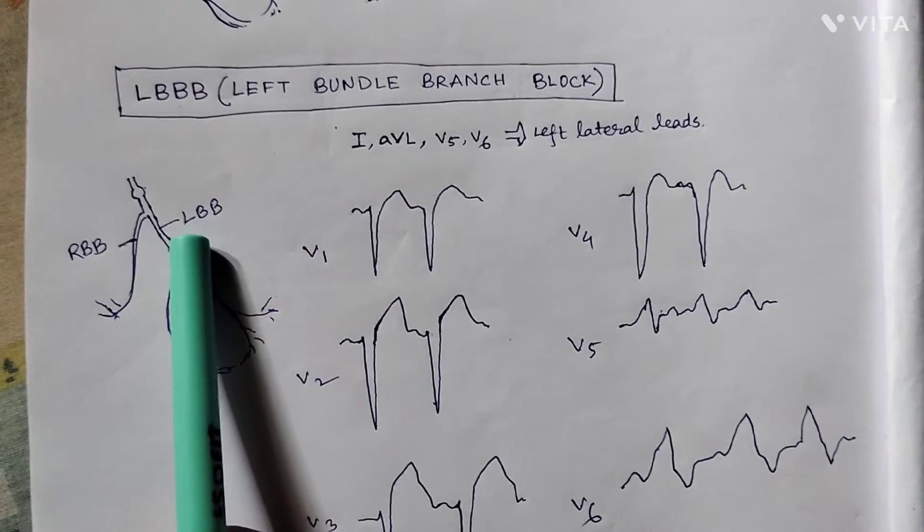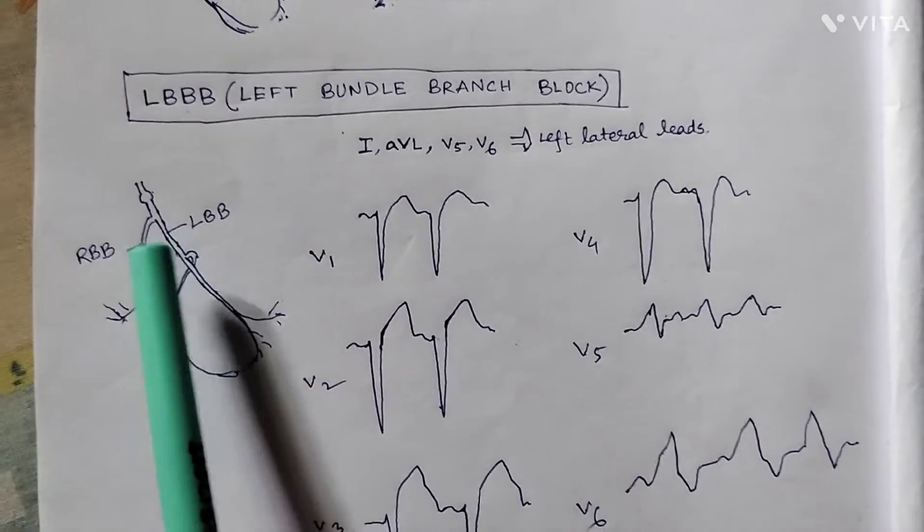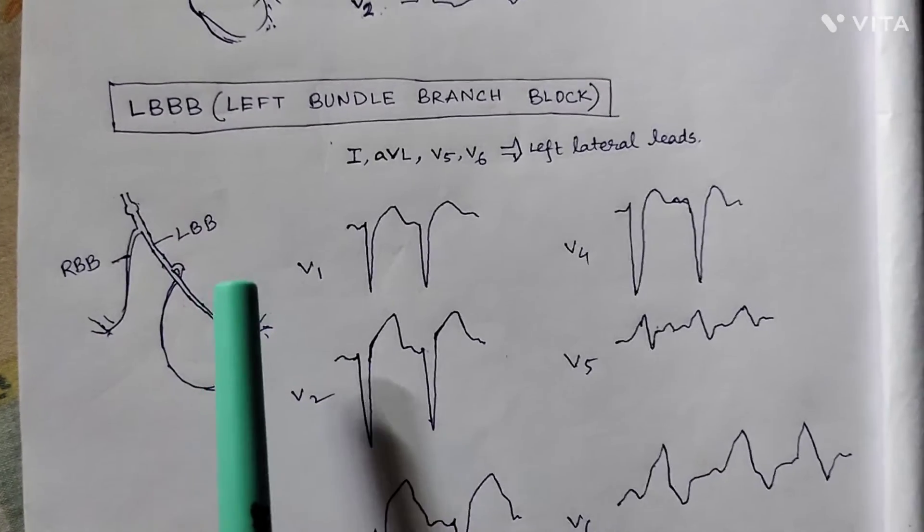this is the right bundle branch, this is the left bundle branch. In LBBB, the conduction through the left bundle branch is obliterated, resulting in delayed left ventricular depolarization.